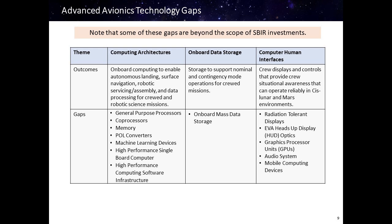To achieve the outcome of onboard computing to enable autonomous landing, surface navigation, robotic servicing and assembly, and data processing for robotic science missions, we've identified some gaps including general purpose processors, co-processors, memory, point-of-load converters, machine learning devices, as well as high performance single board computers and software infrastructure.